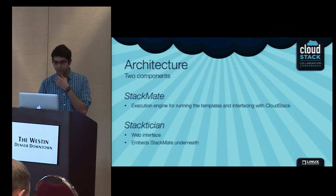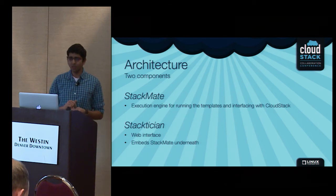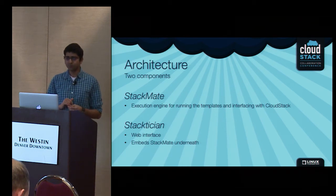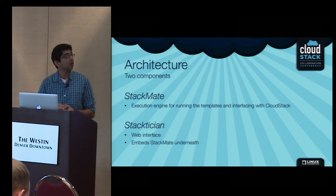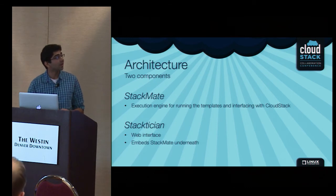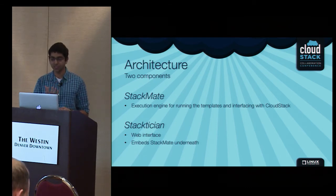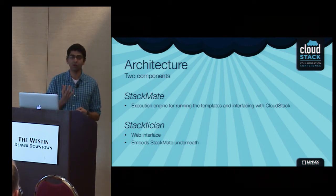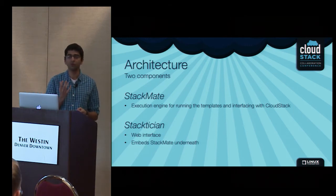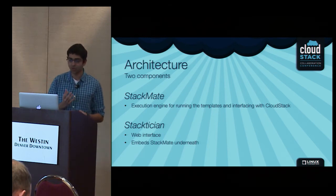The architecture and implementation: Stactician has two components. The first is StackMate — the main execution engine that drives the running of templates on top of CloudStack. It treats whatever is defined in your JSON template as a workflow with a directed acyclic graph.